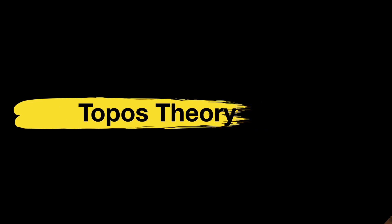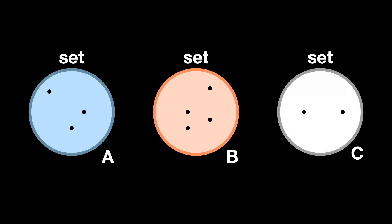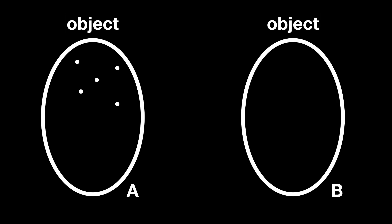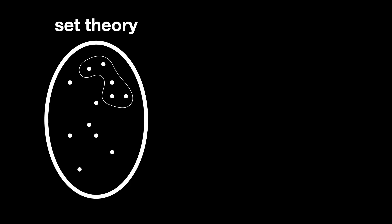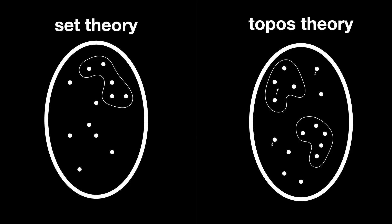Topos theory, a sophisticated and highly abstract area developed in the 1960s by William Lawvere and Myles Tierney, features a topos — a type of category that behaves much like a category of sets but with a richer structure. In classical set theory you have sets and functions mapping elements between them. Topos theory extends this to more general objects in a category that don't have to be sets but still behave in a set-like manner. Morphisms replace functions, and the category must satisfy specific axioms ensuring objects and morphisms can be handled similarly to sets and functions.